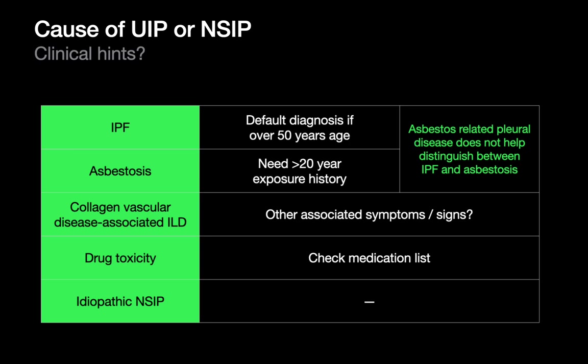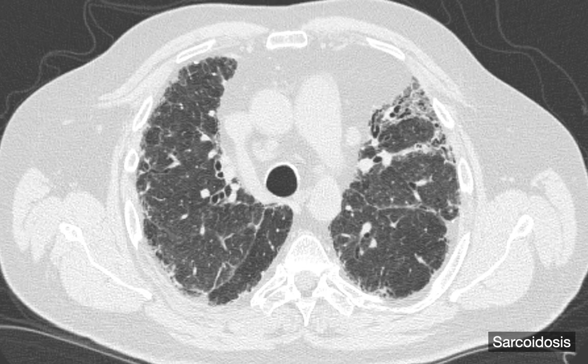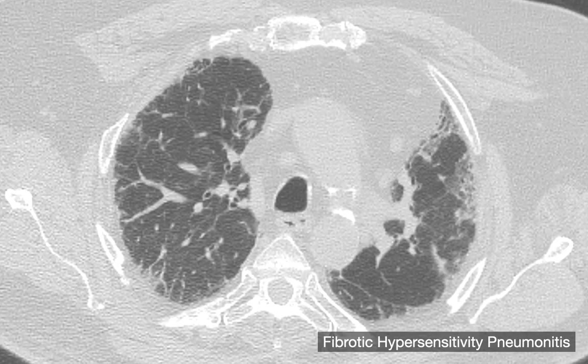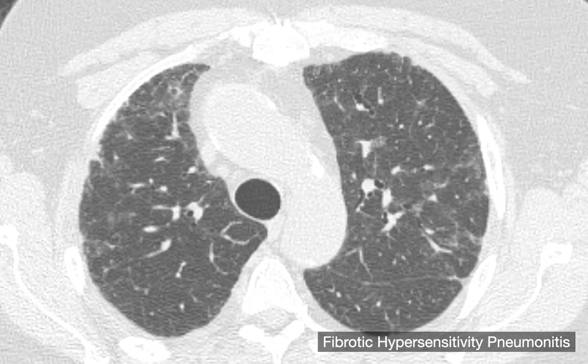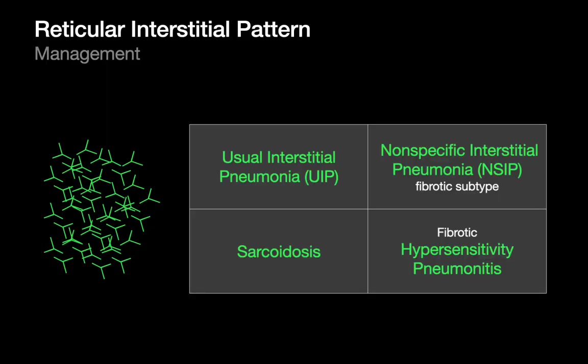Not only do we worry about UIP and fibrotic NSIP in the reticular interstitial pattern differential — we also worry about sarcoid. Sarcoid can sometimes present with a reticular interstitial pattern, maybe not as lower lobe predominant as the first two diseases. Reticulation can range from coarse to really subtle. Finally, fibrotic HP can also result in a reticular interstitial pattern and is not always lower lung predominant.